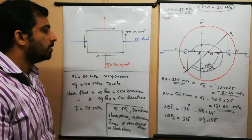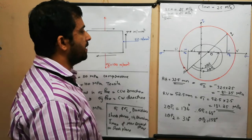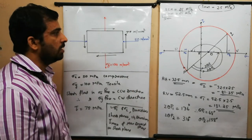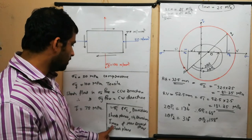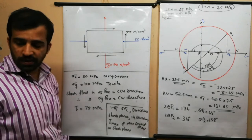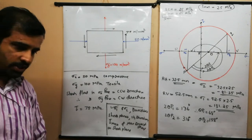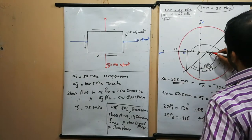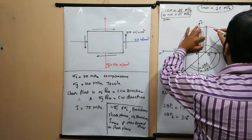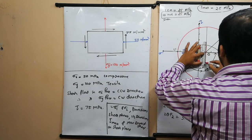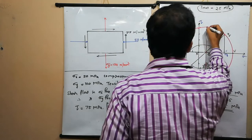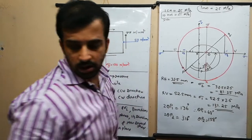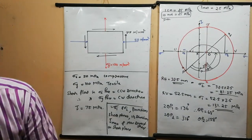Now we can see how to measure the maximum shear stress and direct stress on the shear plane. To identify the shear planes, we draw a vertical line passing through center O. The extreme top point is marked J and the bottom point K. Therefore OJ and OK are the shear planes.